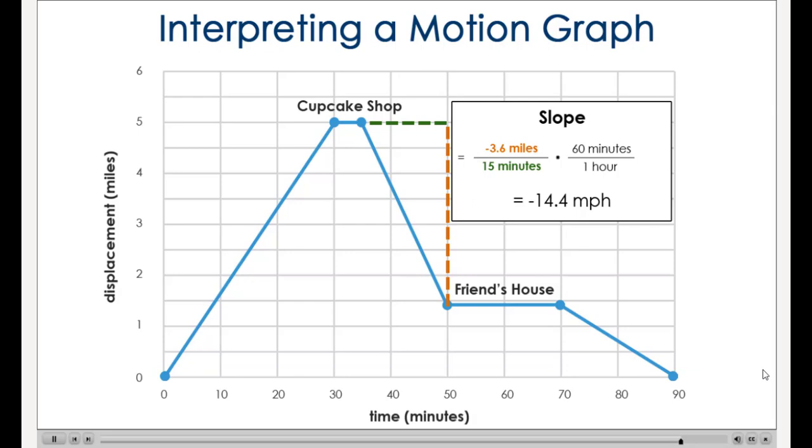We would say that the speed is 14.4 miles per hour, but if we included the direction, we would consider 14.4 miles per hour west to be an average velocity.